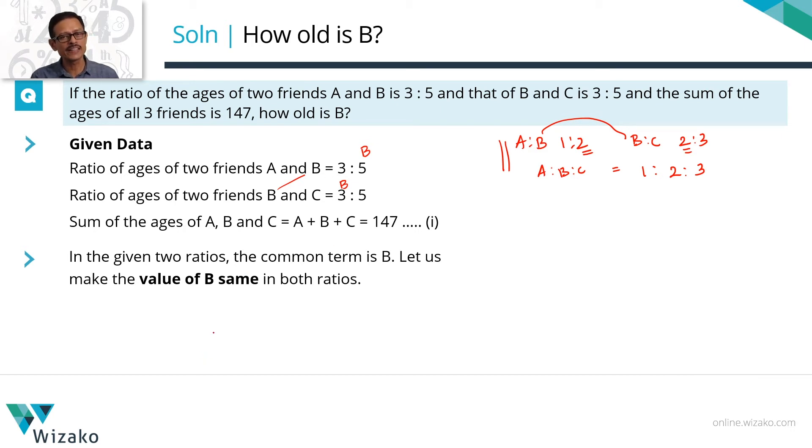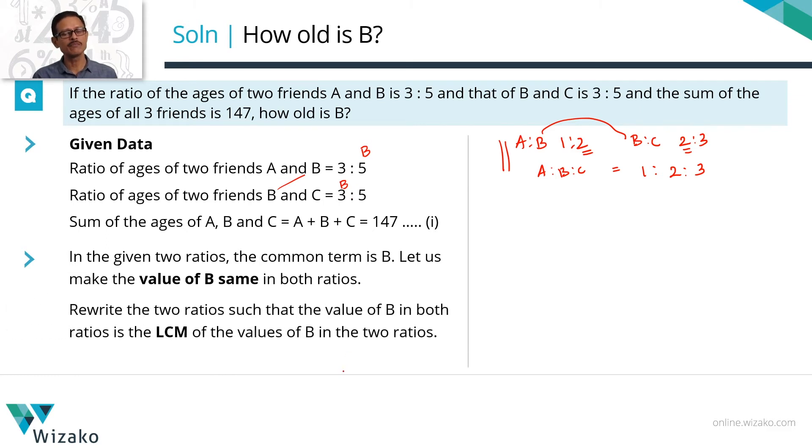How do we go about doing it? The very systematic way of doing it is basically, write the value of B in both these ratios. Actually write both these ratios to have equivalent values such that the value of B is the same. How do you make the value of B same? Find the LCM of B in both these cases.